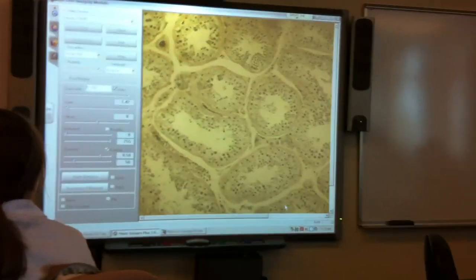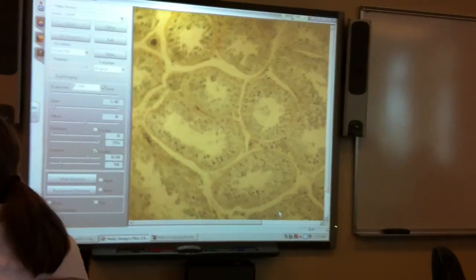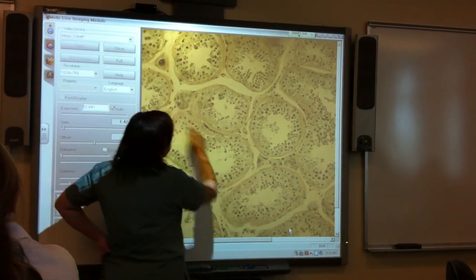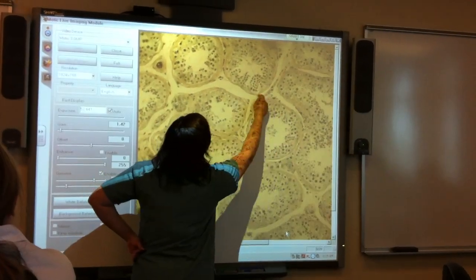So we know that these are sperm cells, or the seminiferous tubule. Each ring is a seminiferous tubule. We've got this tissue on the outside. Okay, what are these?